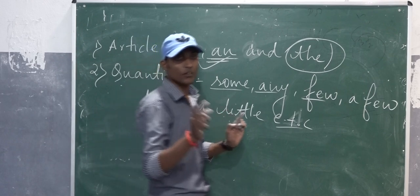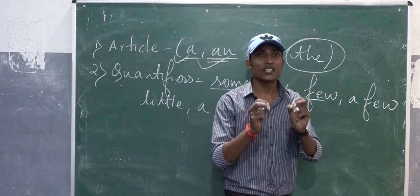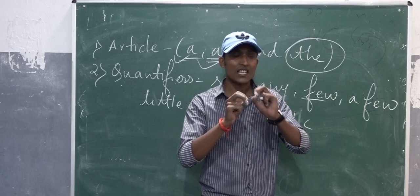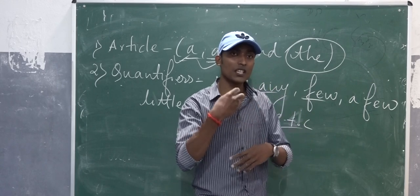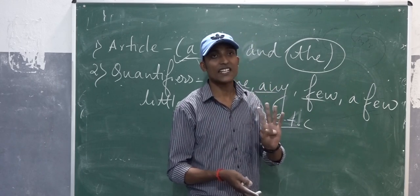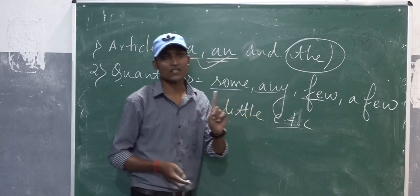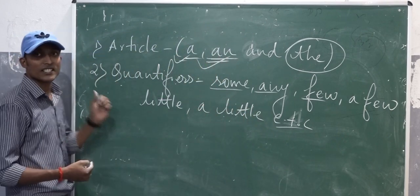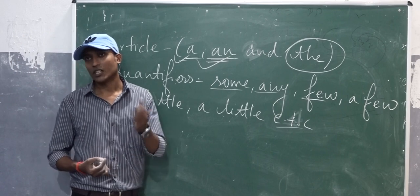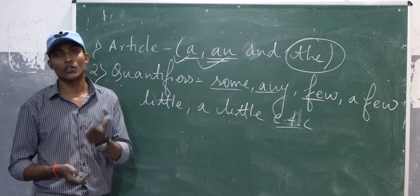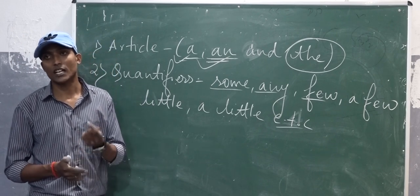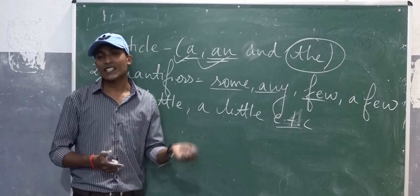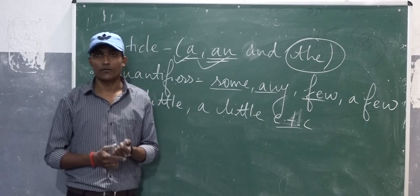To recap: a determinant is a word that we use before a noun to show how the noun is being used. It basically has six types: the first is article, the second is possessive, the third is distributive, the fourth is demonstrative, the fifth is quantifiers, and the last one is interrogative.